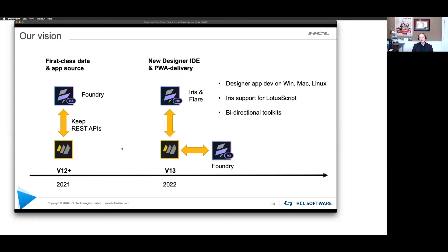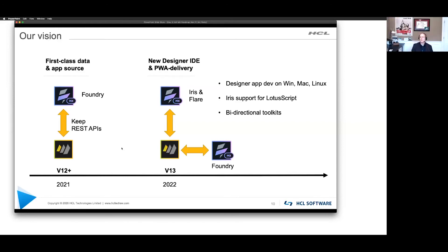That was Foundry — the middleware layer with Domino. But what if we could take Iris, which is the IDE, and Flare, which is the patented engine that does the rendering on native devices and also provides PWA support — what if we could add that designer to a Domino system? How cool would that be? And what if we went even further and started supporting Linux as well — and maybe LotusScript — with toolkits where we could go back and forth? If you were developing today on Windows, we would add Mac and Linux, and you can move between all of those.